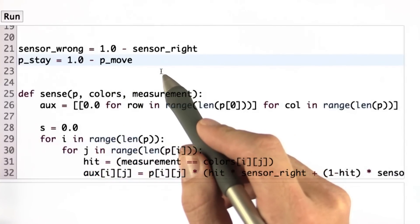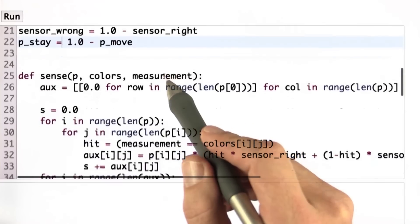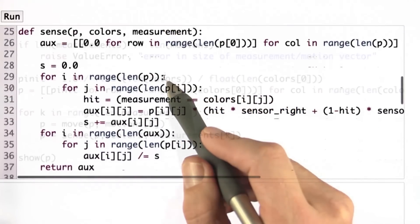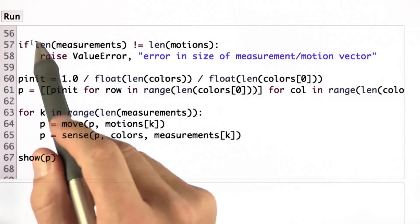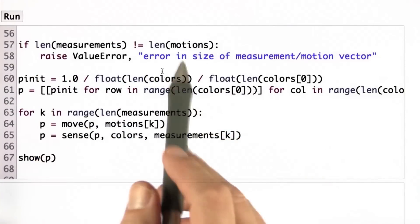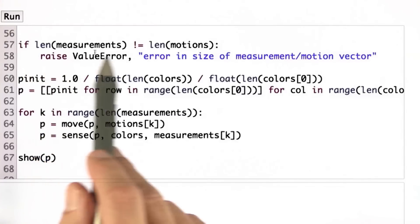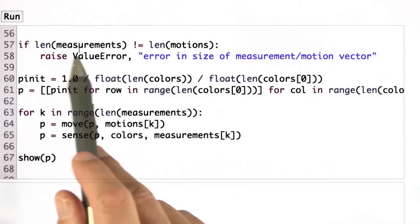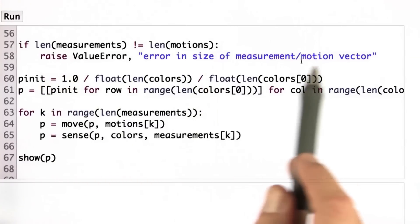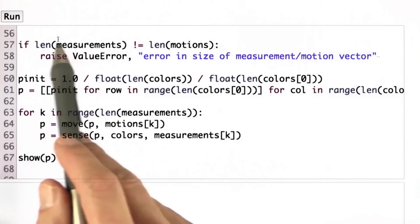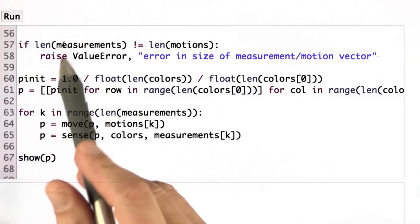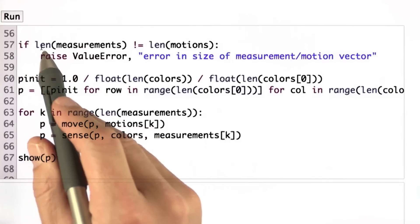Let me scroll down very slowly. Let me first go to my main routine. I actually put in a little check whether the length of the measurements vector is the same as the motions vector, and it would give me an error message if not. Of course, this wasn't necessary for you. I just did it because I want my software to look nice.